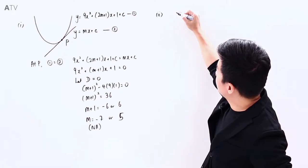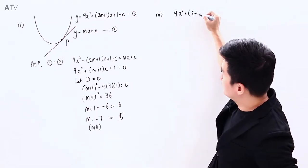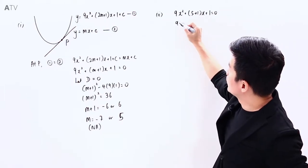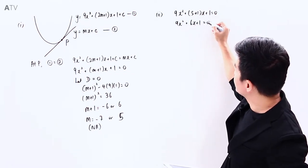So with m equal to 5, that means 9x² plus 5 plus 1x plus 1 equals 0. So 9x² plus 6x plus 1 equals 0.